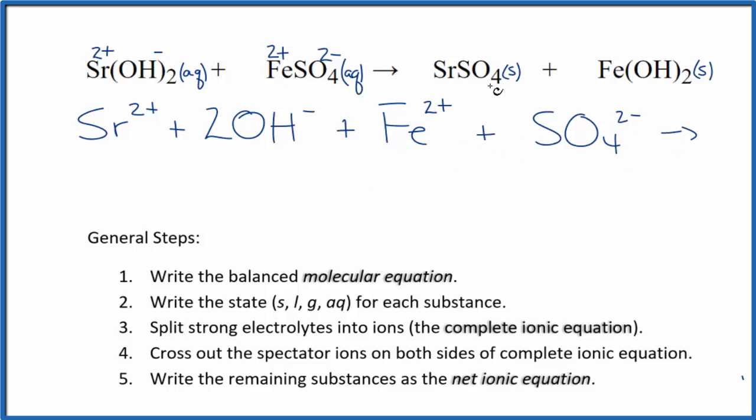For the products, we don't split solids apart in net ionic equations. They're not split apart in the test tube, so we're not going to split them apart in our equation. So we just write SrSO₄. And then same thing for the iron 2 hydroxide. It's a solid, so we don't split it apart. And this is the complete ionic equation.